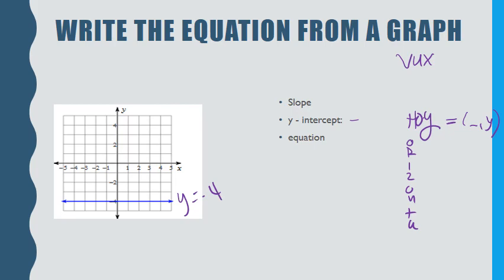For a vertical line — straight up and down — the slope is undefined, and the equation is x equals whatever the x-value is from the ordered pair.